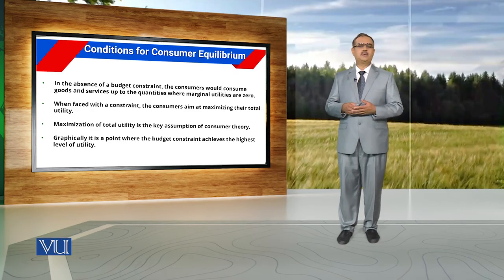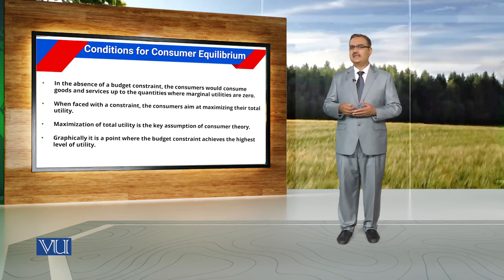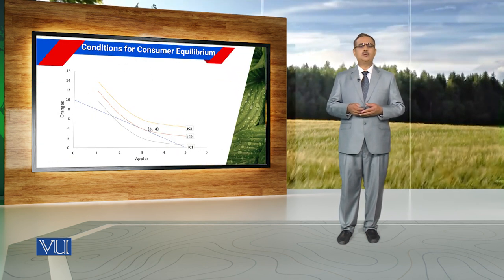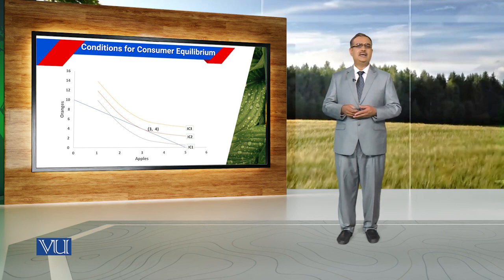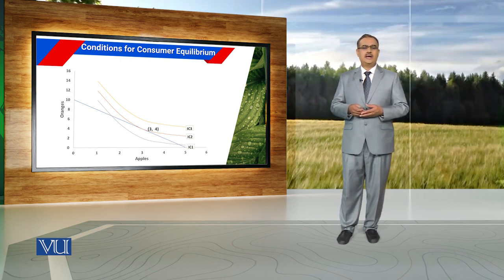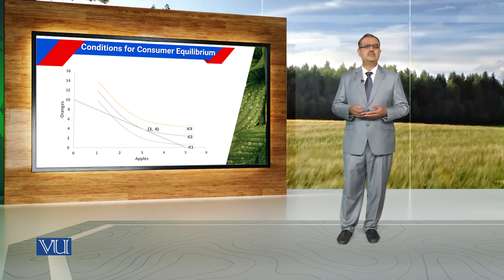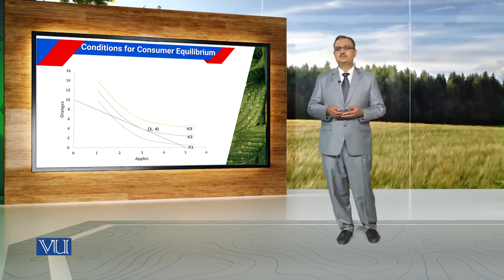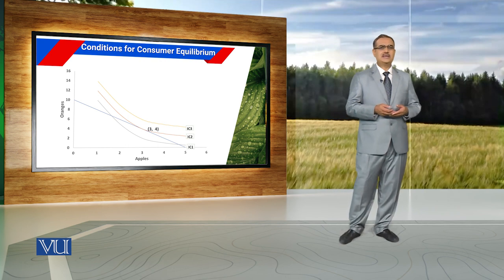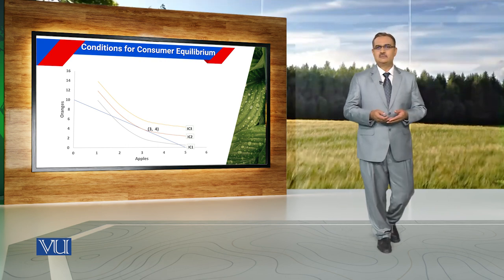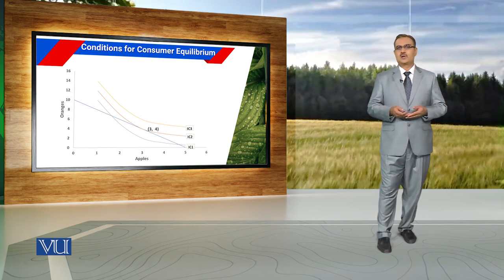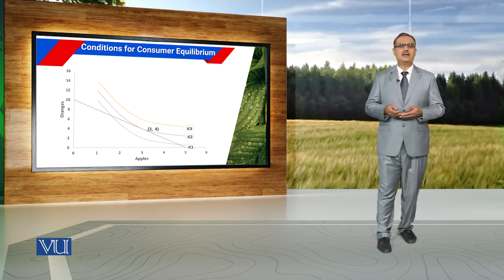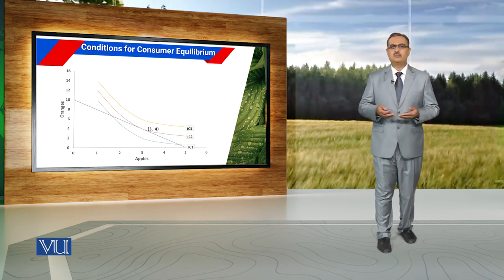To explain consumer equilibrium, we are taking apples on the horizontal axis and oranges on the vertical axis. In this diagram, the downward sloping solid blue color line is the budget constraint of the consumer. It indicates different combinations of apples and oranges that a consumer can afford using his limited income. All combinations that lie below this blue line are attainable, and all those above it are unattainable under his budget constraint.